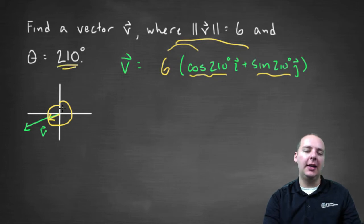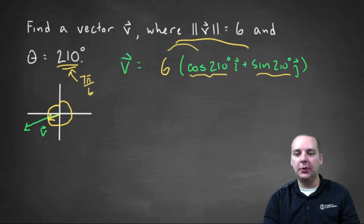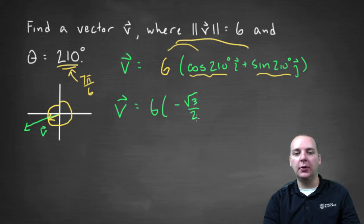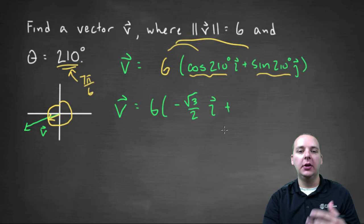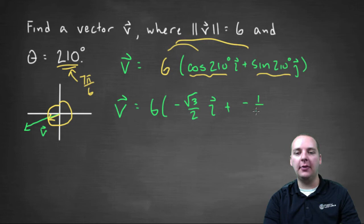Two hundred and ten degrees on the unit circle — thinking in radians, that would be seven pi over six. Now let's compute these values. The cosine of seven pi over six, or cosine of two hundred and ten degrees, is negative root three over two, for the i component. A quick side note: it's super important, especially in an upper level calculus class, to be very sharp with your unit circle and know the sine and cosine of all major angles. The sine of seven pi over six would be negative one half, for the j component.